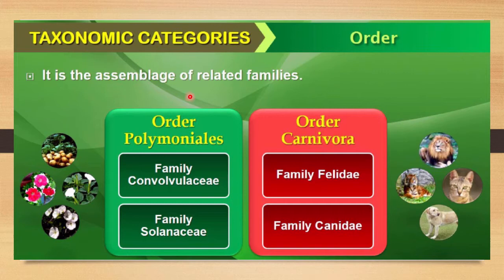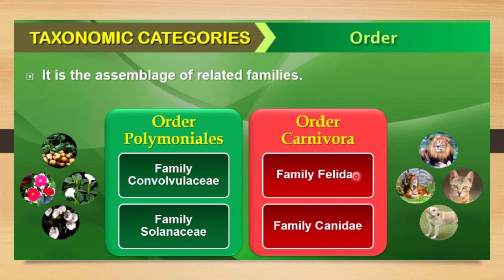Next to family is the order, which is an assemblage of related families. For example, the plant order Polemoniales includes two families: Convolvulaceae and Solanaceae. The animal order Carnivora includes two families: Felidae and Canidae. Two or more families together form one order.